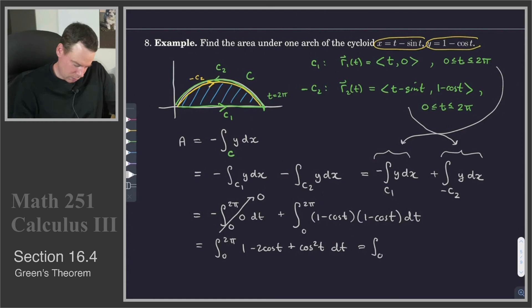We might as well finish it off here. So it's 0 to 2 pi. 1 minus 2 cos t. What is cos squared of t? Well I can write that using a double angle formula. And that'll be 1/2 plus 1/2 cos 2t dt.